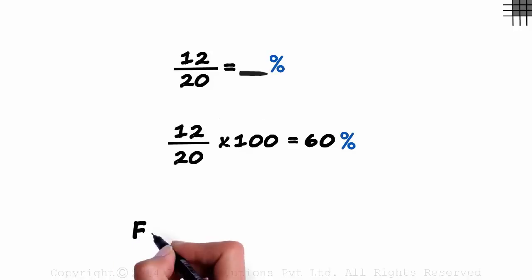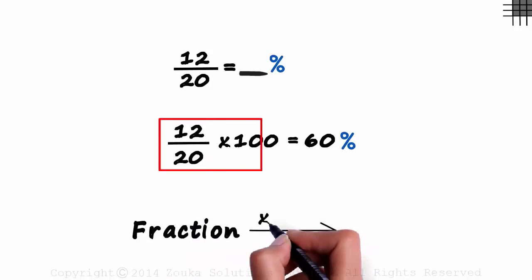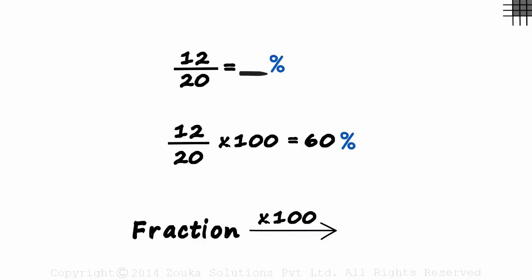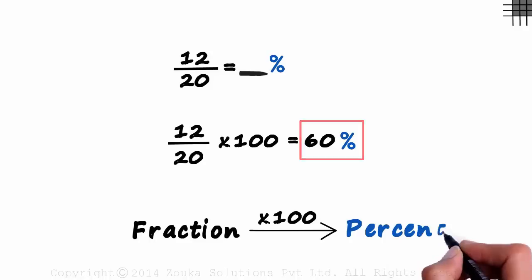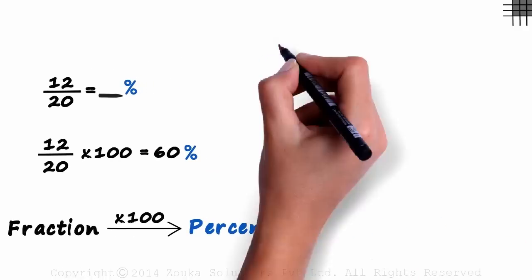If we have a decimal fraction, we just need to multiply it with 100 to convert it into percent terms. But why? Is this always true? What's the logic?